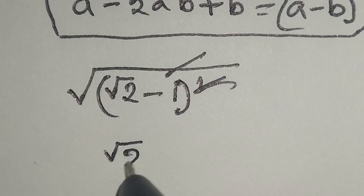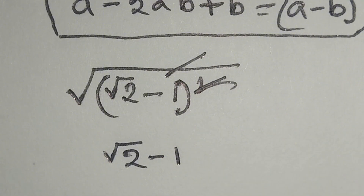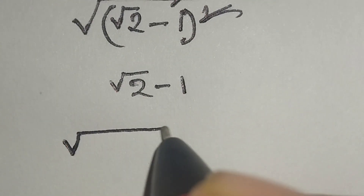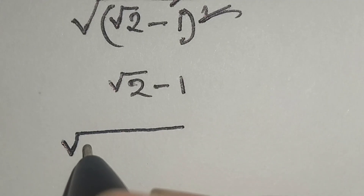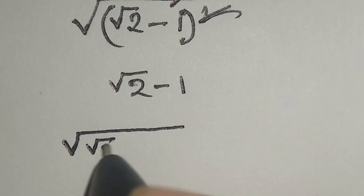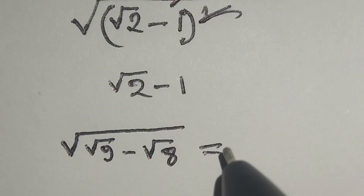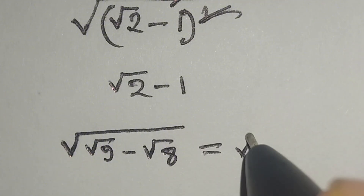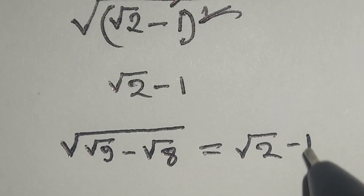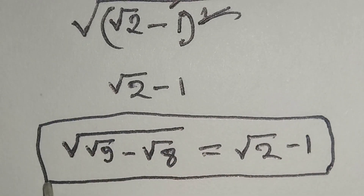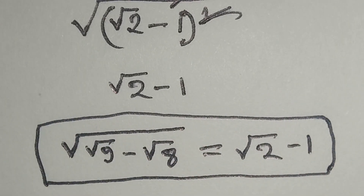What remains is square root of 2 minus 1. So, square root of (square root of 9 minus square root of 8) is equal to square root of 2 minus 1. This is our final answer. Thanks for watching the video, please like, comment, share and subscribe.